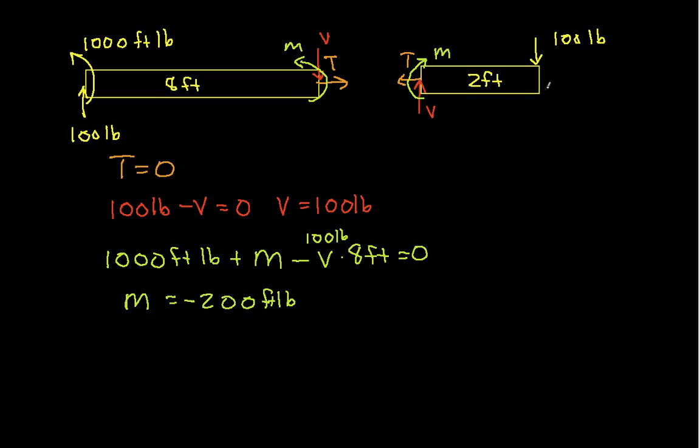if we look at this free body diagram, again the sum of the forces in the x direction is 0, it says T is 0. The sum of the forces in the y direction is 0, which again tells us that V is 100 pounds. The sum of the moments is also 0. Here I've got a moment that's inducing clockwise rotations, so this will be a minus M. I then have the moment about this point that the 100 pound force is generating through a 2 foot moment arm, and that's counterclockwise, so I have 100 pounds times 2 feet, and this is equal to 0,